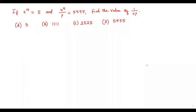Here we have a SAT math problem. The information: if x to the 10th power equals 5, and x to the 9th power over y equals 5555, find the value of 1 over xy. We have two pieces of information: x^10 = 5 and x^9/y = 5555, and we need to find 1 over xy.